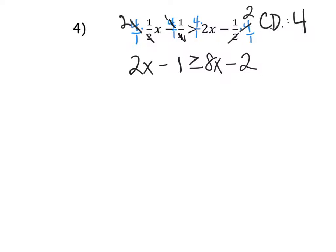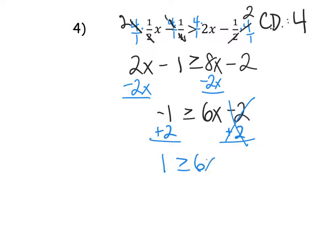Alright, let's get the variables together. So I move the smaller variable. 2x is smaller. Negative 1 is all alone on the left. 8x take away 2x, 6x, and then minus 2. Let's get the 2 and the negative 1 together. This is a negative 2, so I'm going to add 2 to both sides. 1 is greater than or equal to 6x.